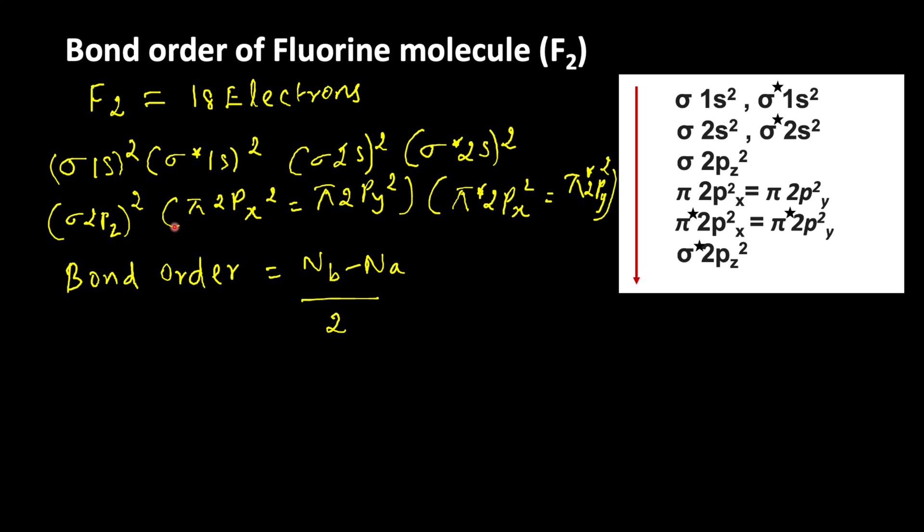The electrons which are present in sigma 1s, sigma 2s, and pi 2px and pi 2py orbitals are called bonding electrons. The electrons which are present in sigma star and pi star orbitals are called anti-bonding electrons.